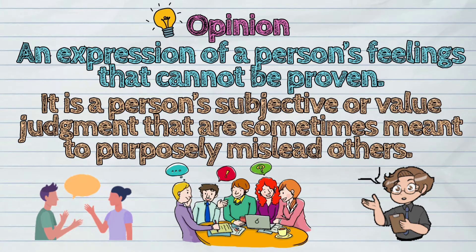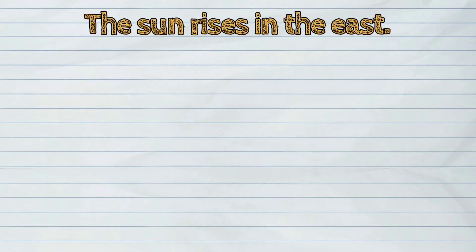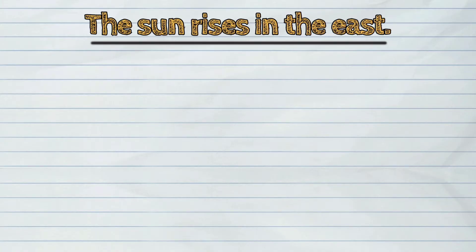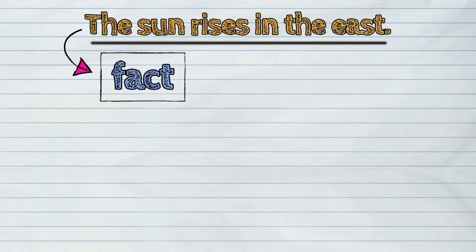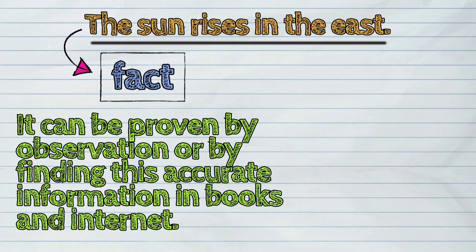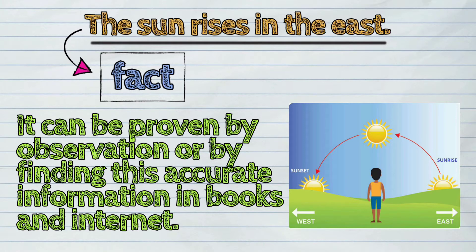Let us study the following examples. The sun rises in the east. This statement is an example of a fact. Because it can be proven by observation or by finding this accurate information in books and the internet.